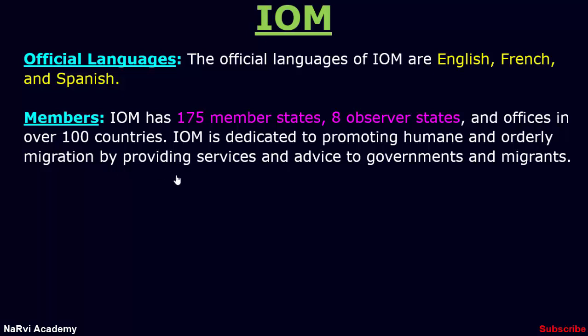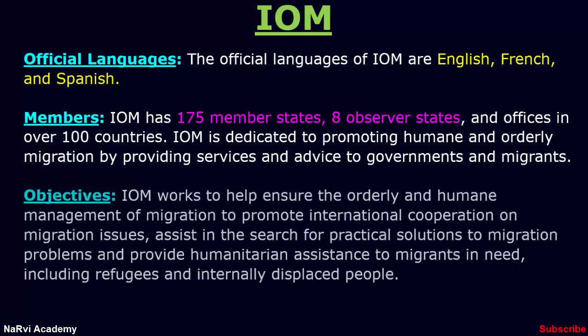IOM has 175 member states, eight observer states, and offices in over 100 countries. IOM is dedicated to promoting humane and orderly migration by providing services and advice to governments and migrants. A PDF file with the description of the 175 member states and eight observer states has been attached.